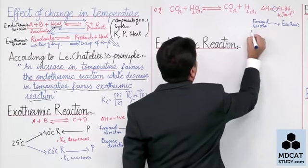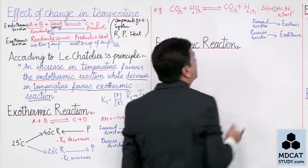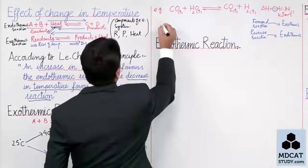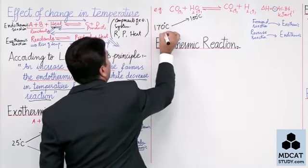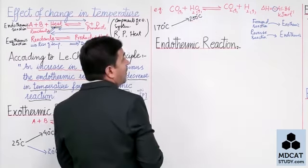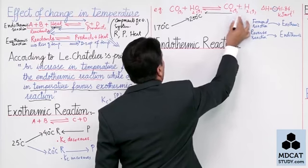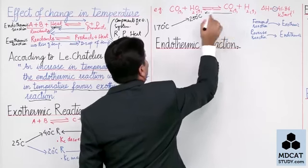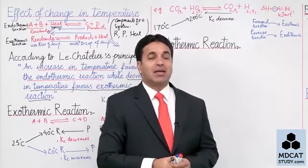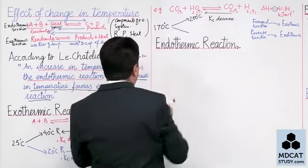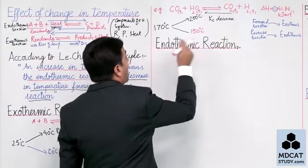And if the forward reaction is exothermic, then the reverse reaction will be endothermic. This reaction is already happening at 170 degrees centigrade. If you increase the temperature to 200 degrees centigrade — increase in temperature — that favors endothermic, which is the reverse reaction. So equilibrium position shifts and Kc also changes. Conversely, if you decrease temperature from 170 to 150 degrees centigrade — decrease in temperature means you are removing heat from the system.